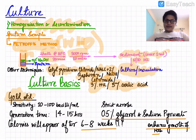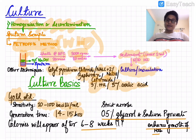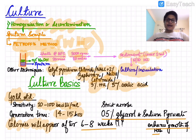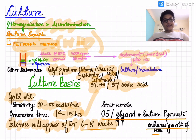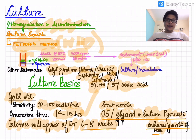Sputum culture is the gold standard with sensitivity of 10 to 100 bacilli per ml. The bacilli have a generation time of 14–15 hours, but colonies are visibly apparent only after 6–8 weeks, which is the major disadvantage. Because mycobacteria are strict aerobes, 0.5% glycerol and sodium pyruvate are added to many culture media to enhance growth and produce faster results.